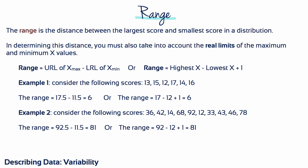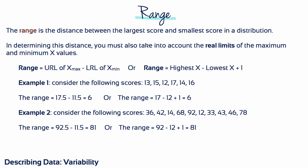In example 2, consider these scores: 36, 42, 14, 68, 92, 12, 33, 43, 46, and 78. Here the highest and lowest scores are 92 and 12. 92 minus 12 plus 1 equals a range of 81. That's exactly the same as taking the upper real limit of 92, which is 92.5, subtracting off the lower real limit of 12, which is 11.5, which gives us a range of 81.